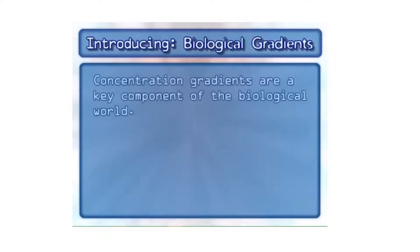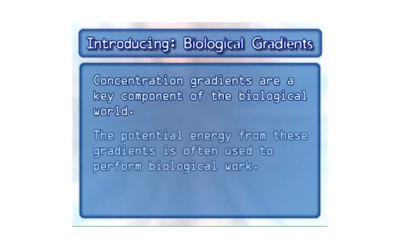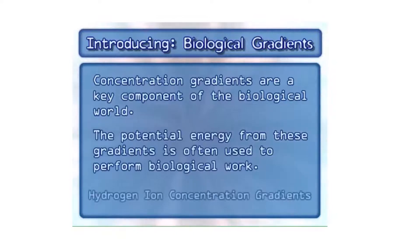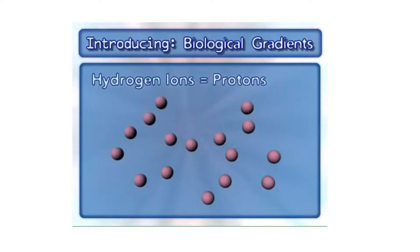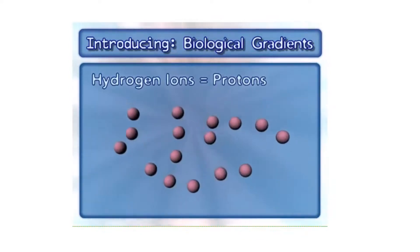Concentration gradients are a key component of the biological world. The potential energy from these gradients is often used to perform biological work. Here we will focus on hydrogen ion concentration gradients. Hydrogen ions are also known as protons.